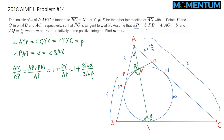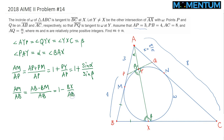Similarly, we can look at the ratio AM to AB. AM over AB equals AB minus BM divided by AB, which splits as 1 minus BM over AB. But BM equals BX by equal tangents, so it's 1 minus BX over AB. Applying the law of sines on triangle ABX: BX is opposite angle alpha, and AB is opposite angle 180 minus beta, but sine of 180 minus beta is just sine beta. So this ratio is 1 minus sine alpha over sine beta.